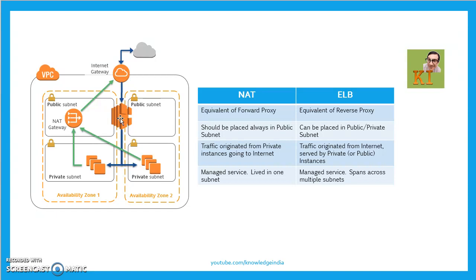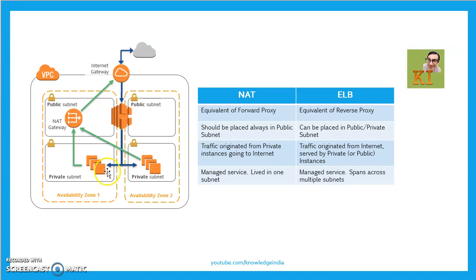ELB works as a reverse proxy. People from outside send traffic to an instance, but that instance is actually inside the private subnet — ELB just accepts and passes it on. So instances in the private subnet, even without a public IP, are able to serve your website. Now, suppose your private instances want to call a third-party API — maybe a weather API or a currency API — as part of their logic. It would not work if they don't have internet connectivity.